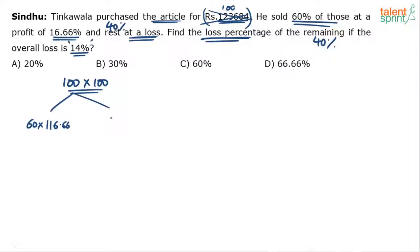And the remaining of these 100, meaning 40 were sold at what price? You have to find out the loss on the remaining. Remaining are 40. So we have split 100 articles. This is number of articles and this is the cost price per article basically. So 100 has been split into 60 and 40. 60 were sold at a profit. So if 100 is the cost price, with a profit of 16.66, the value becomes 116.66. What is the value on the remaining 40?